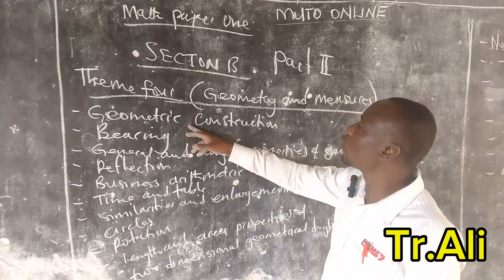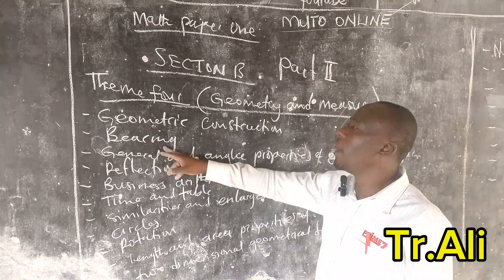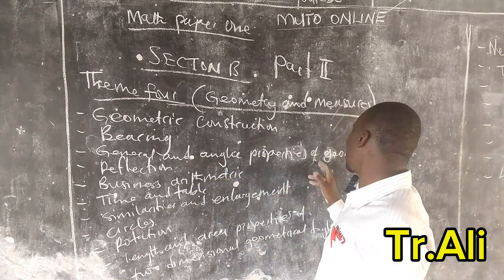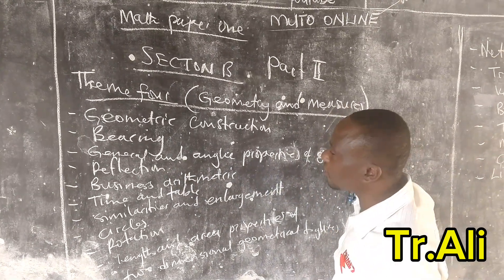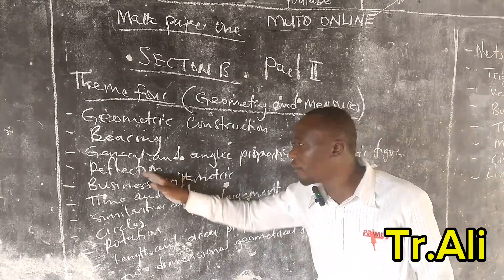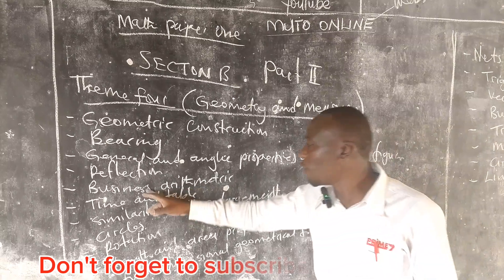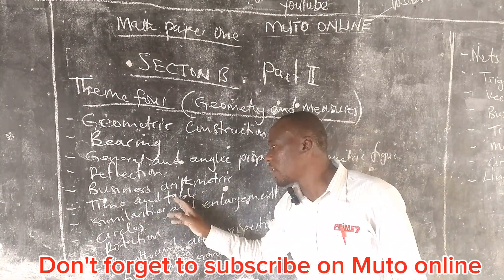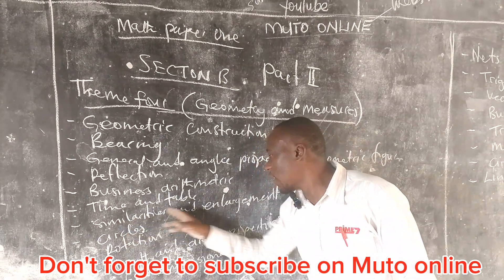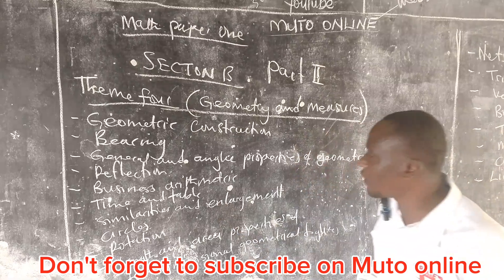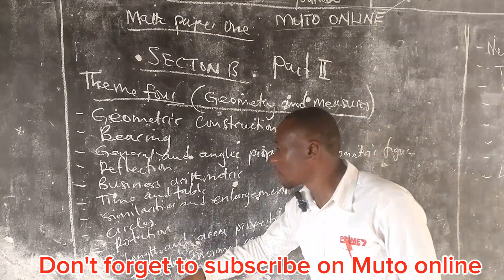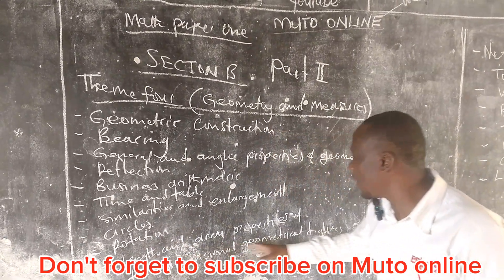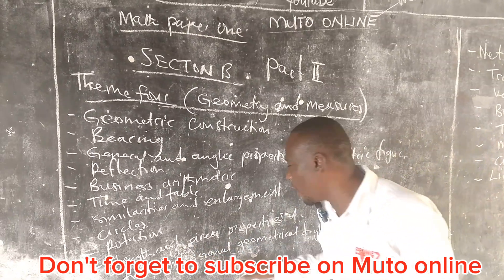The first one is geometric construction, then bearing, general and angle properties of geometric figures, reflection, then business and matrix, time and timetables, similarities and arrangements, circles, rotation, and length and area properties of two-dimensional geometrical figures.